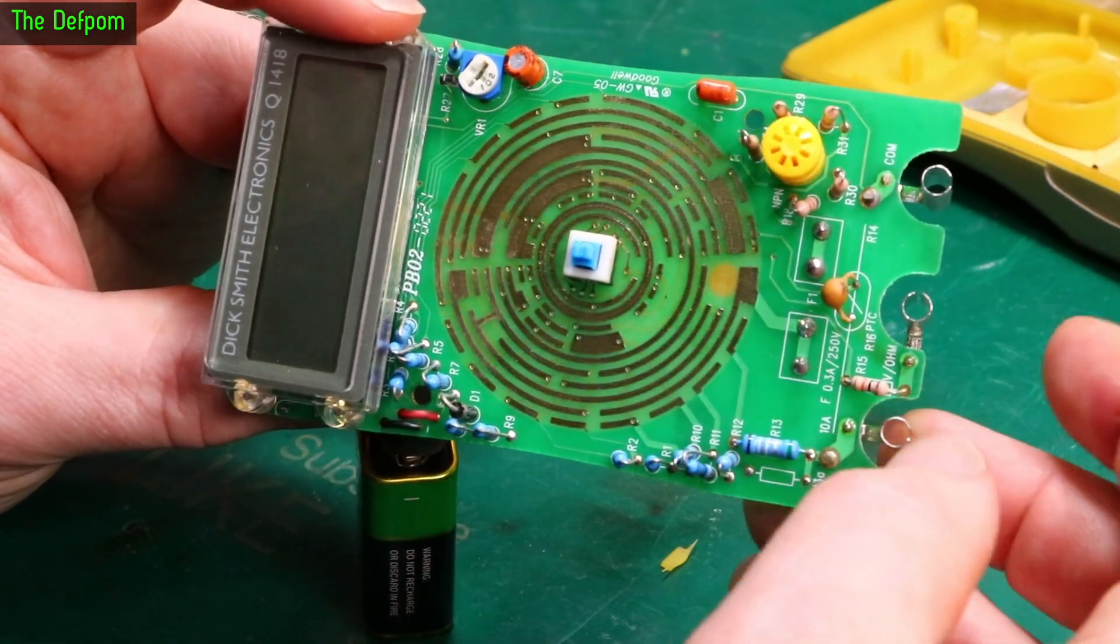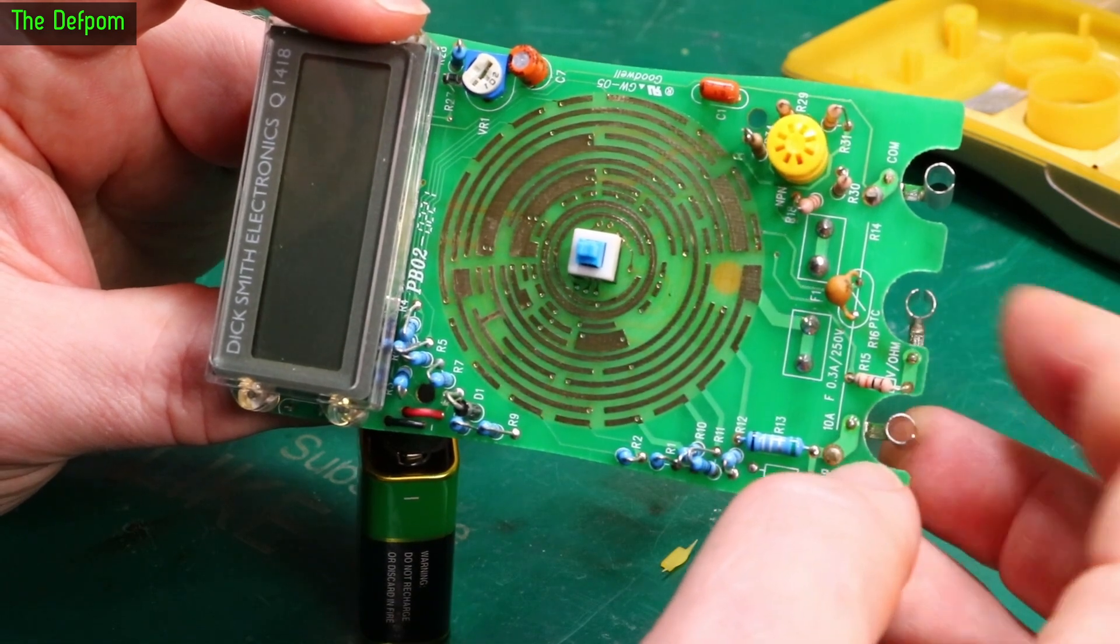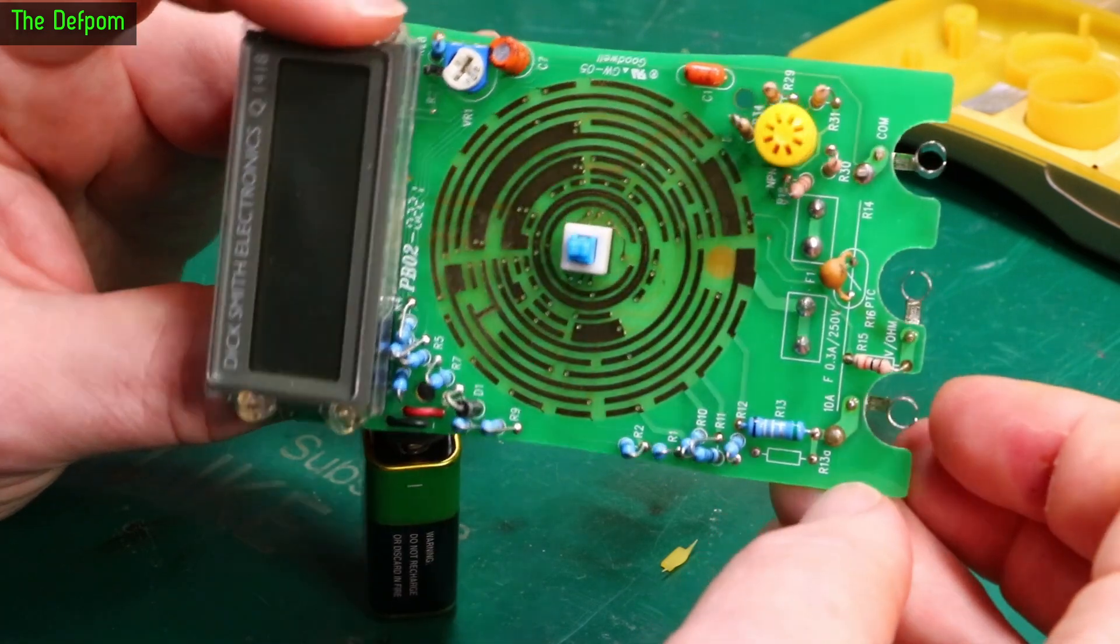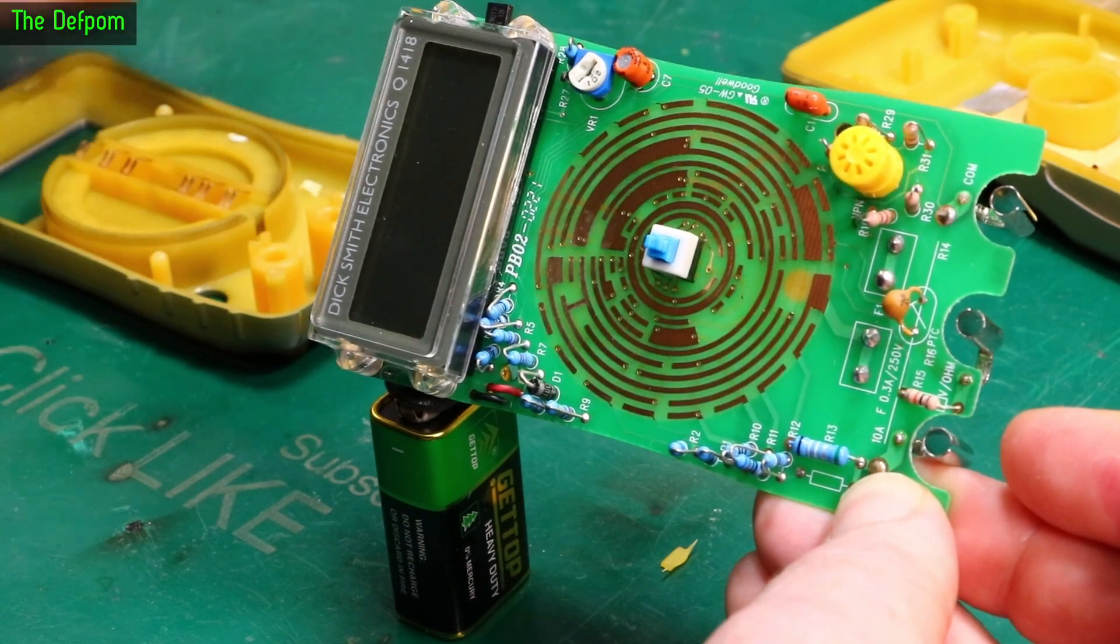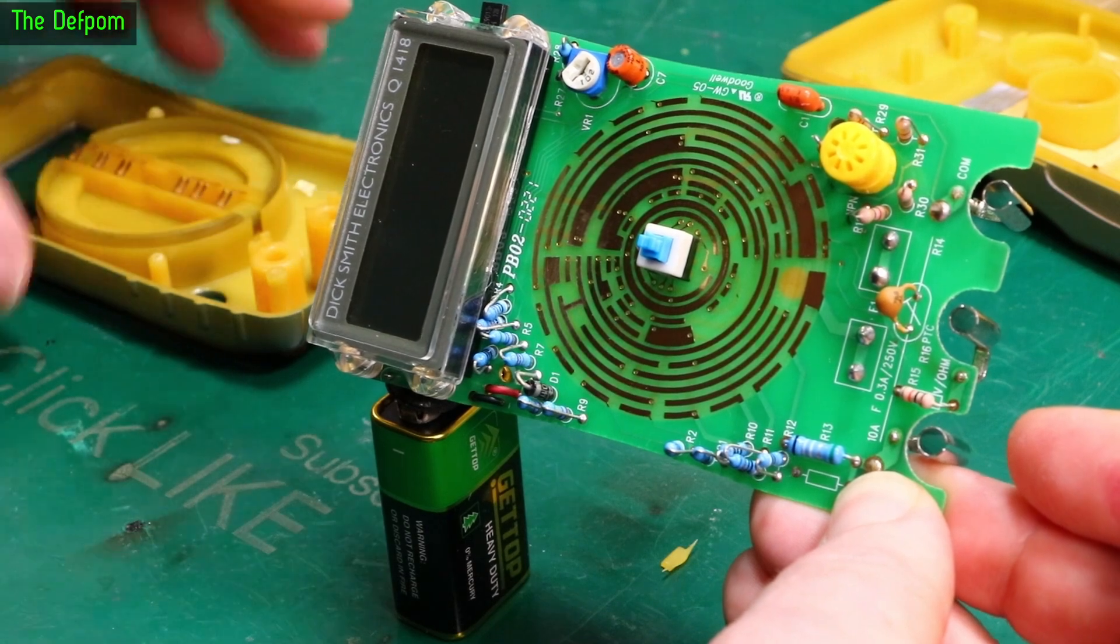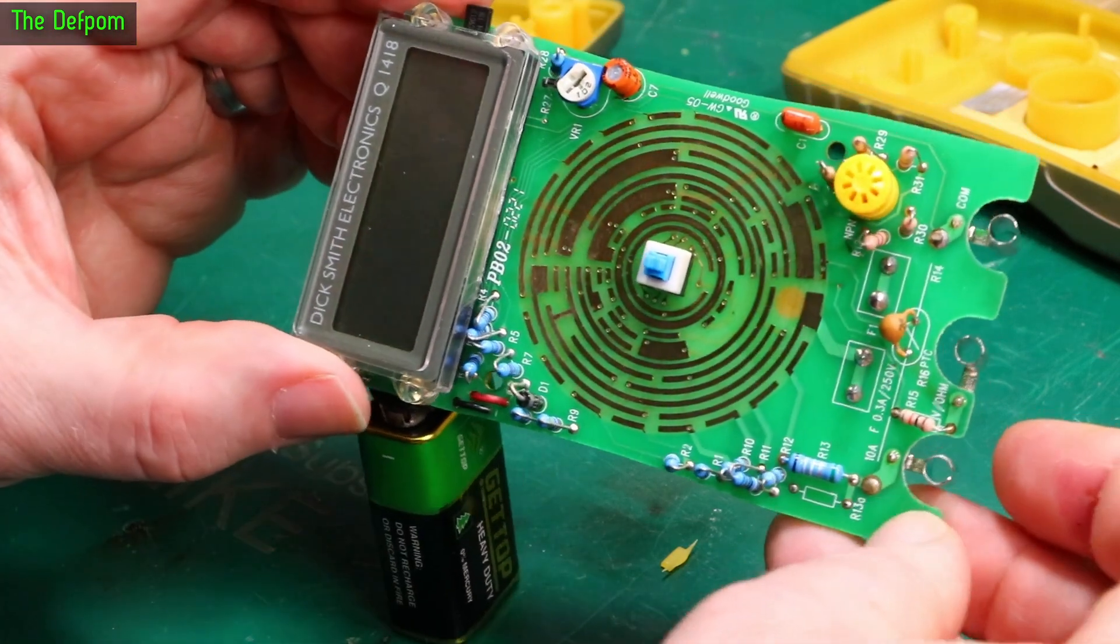A 10 amp current shunt is a big one, and then we've got a smaller one which goes through this resistor here. It does have a current shunt through that one as well. So not much going on there. Anyway, we'll put it back together and we'll test it out.